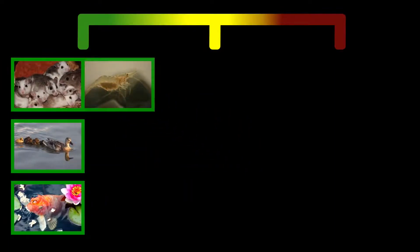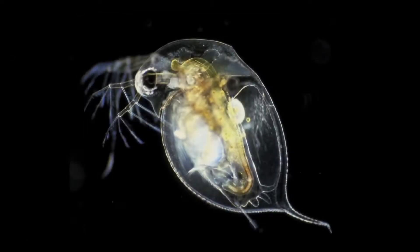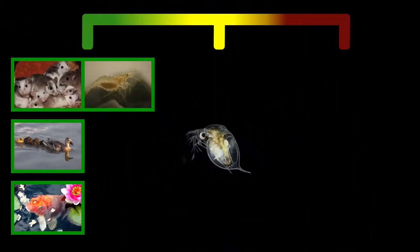However, impurities produced with Bt can cause indirect toxicity to some non-targets. For example, depending on the Bt variety, toxicity to water fleas, an important part of the food web, ranges from low to high.